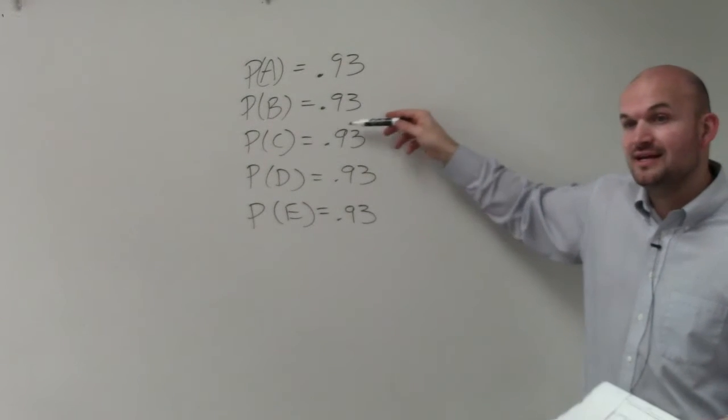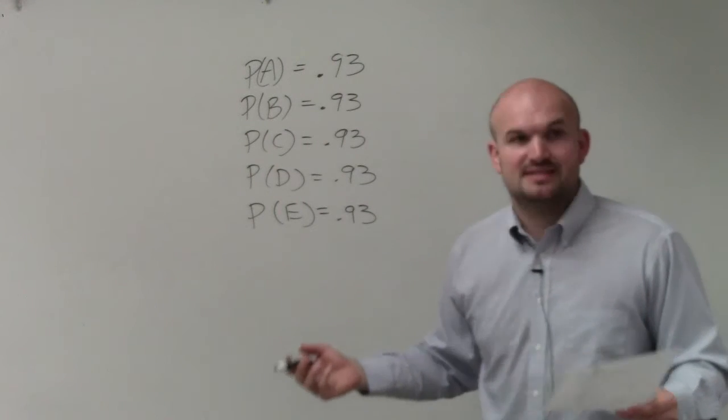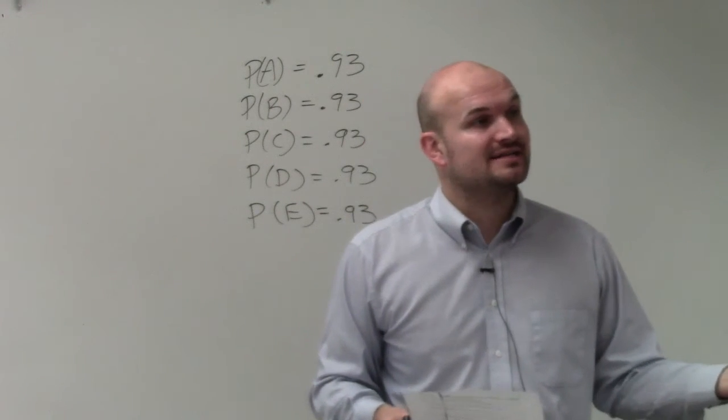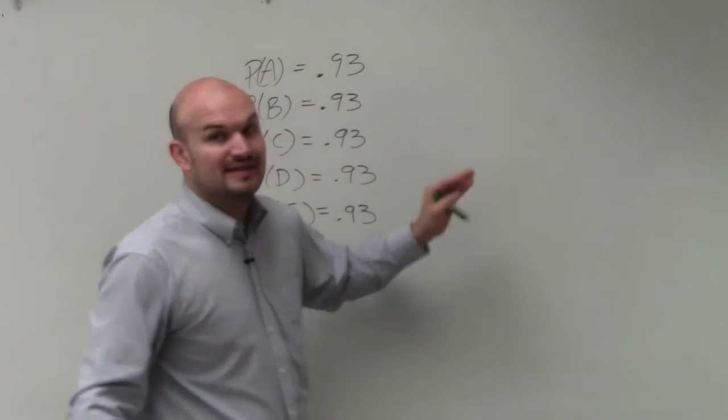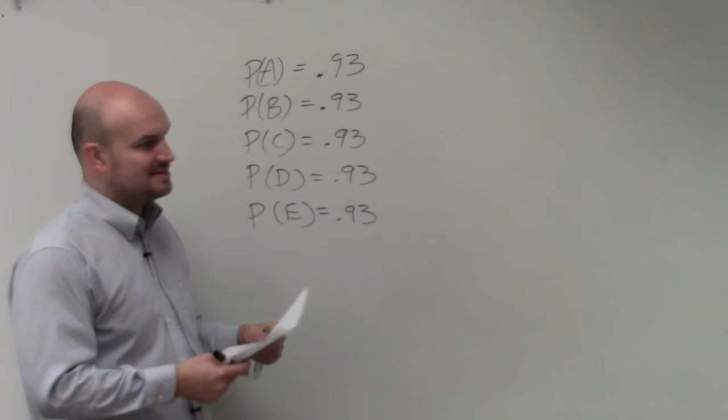Well, for each part it's 93%. So they're not asking if it's an and or an or, but this would be an example of an and. So if you guys remember, when we're talking about the and, the probability of an and would be to multiply our events.